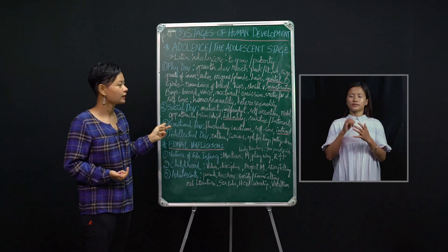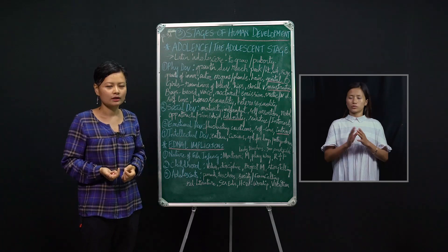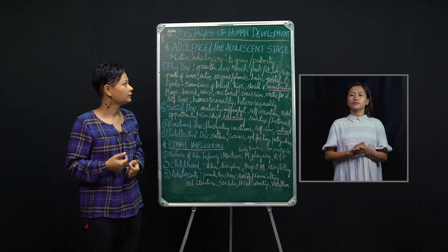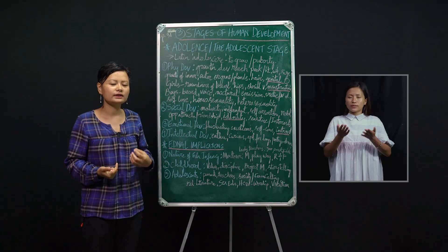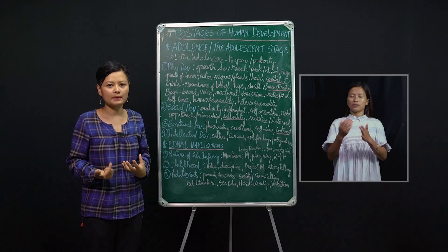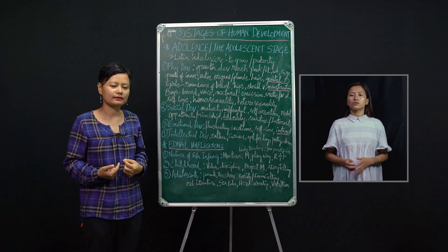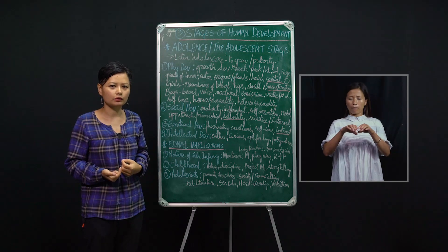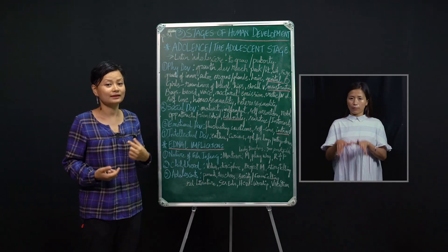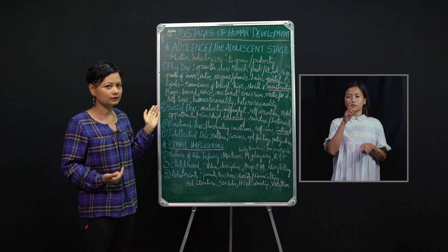Physical development is to do with the body. In this stage there is immense growth and development taking place in the adolescent — it might be the height, the weight, or the size. Even the internal as well as the outer organs of the body grow and reach their maximum peak. The glands, tissues, and bones also harden in the body. So basically you are fully physically developed into a proper human being during the adolescent stage.